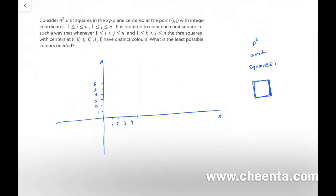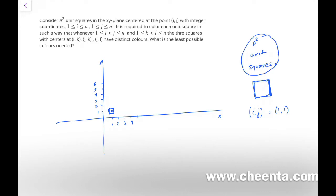So for example, if i comma j equals 1 comma 1, then we will first mark the point 1 comma 1 and then we will draw a square around that point. We have n² such unit squares, where i ranges from 1 to n and j ranges from 1 to n, giving us n² such points and hence n² unit squares.